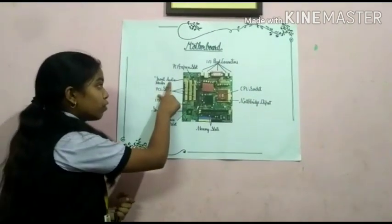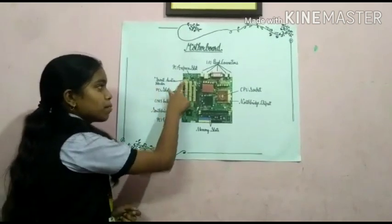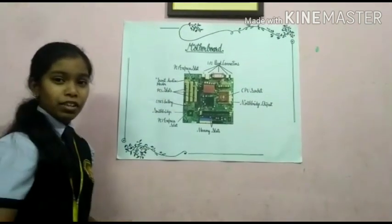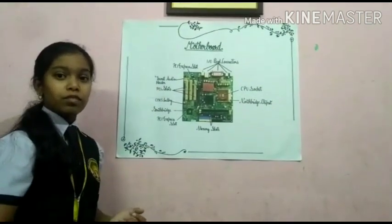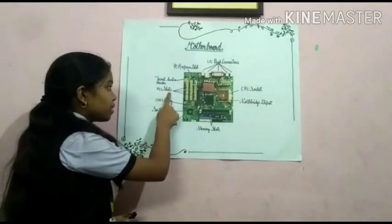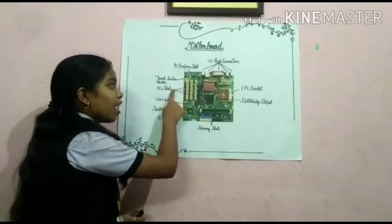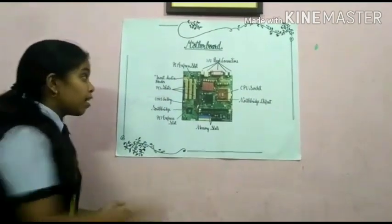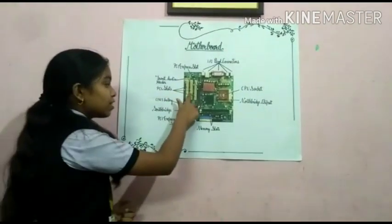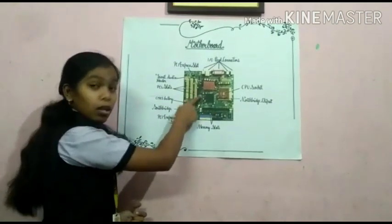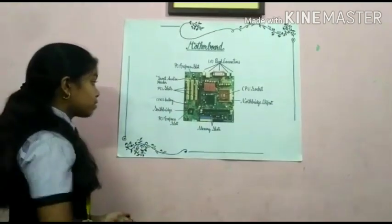The front audio header — this yellow chip is known as the front audio header. And here are the PCI slots; I was talking about the buses. Here are three PCI slots, also known as buses.